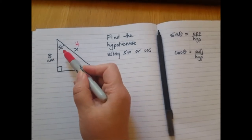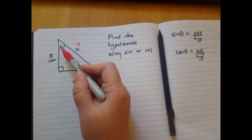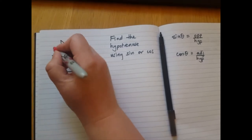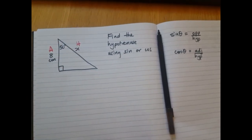Here's the angle I'm interested in, 50 degrees, and I can see that this side is next to the angle. So this side is the adjacent. I'm going to call it a.